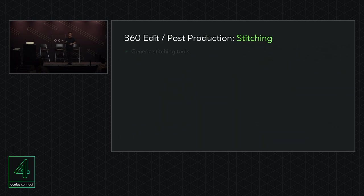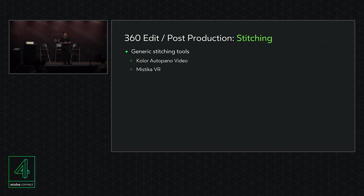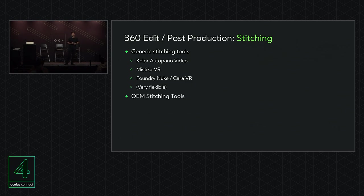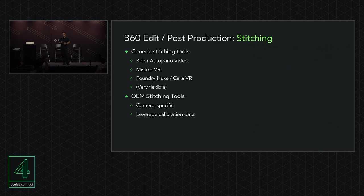Let's talk about stitching. There are generic stitching tools — dedicated stitchers bundled with other 360 video workflow tools — such as Kolor's Autopano Pro, Autopano Video, and Mistika VR. There are also more general tools like Foundry Nuke, used in 360 all the time. What's really interesting is that in the last year, integrated 360 cameras are almost all shipping with their own stitching tools. These are camera-specific and leverage calibration data, so because the manufacturer owns the whole workflow, they're able to use calibration data to help tune the stitch. We're seeing some very good stitches out of the box, however it can be less flexible if you need to go back and tune or change things.